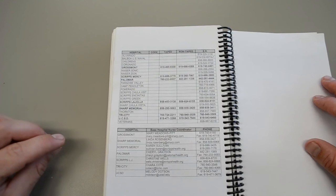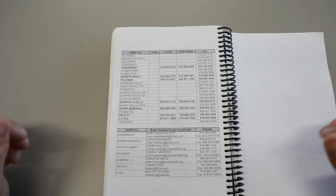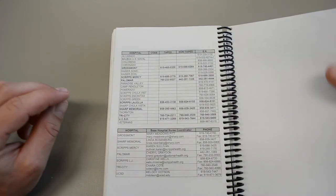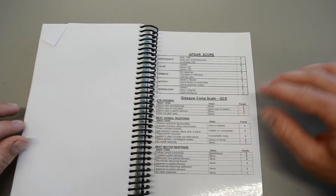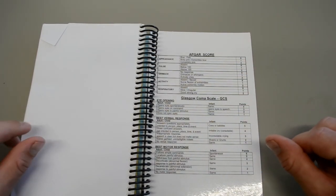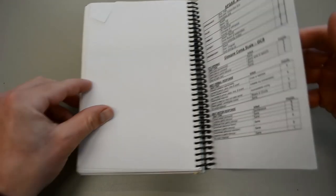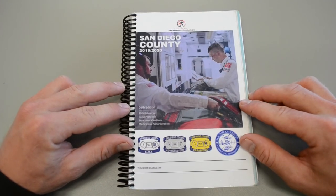We'll talk more about that as we progress through the semester. That's pretty much it. Towards the very back we have the APGAR scoring and the GCS, which again we'll talk about all of that later. So this was an introduction to the San Diego County EMS protocol book.